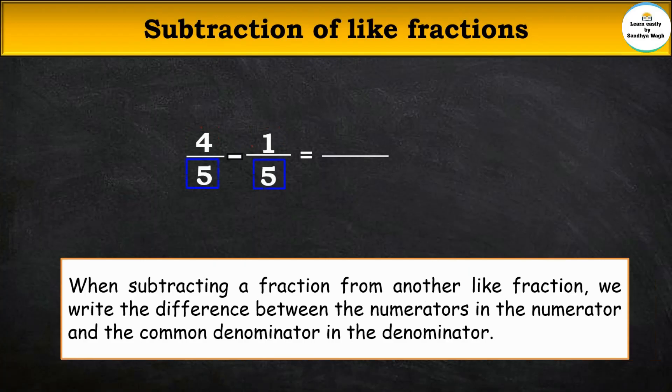The denominator stays as it is. For example, the numerators are 4 and 1, so let us subtract 1 from 4. So 4 minus 1 is equal to 3, and the denominator is 5.